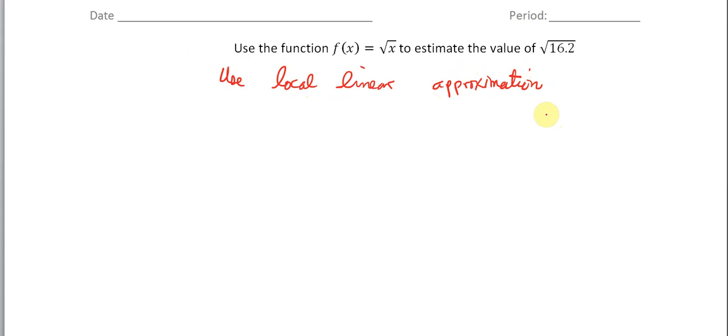We want to use a point that's very close to 16.2 for which we know the exact answer. That would logically point us towards x equals 16, because 16 is close to 16.2. And we know that the square root of 16 is equal to 4. That's the two requirements for picking the point to use to make an approximation. Make it a point that's close to the point we're trying to estimate and make sure the point we pick we know the exact answer for.